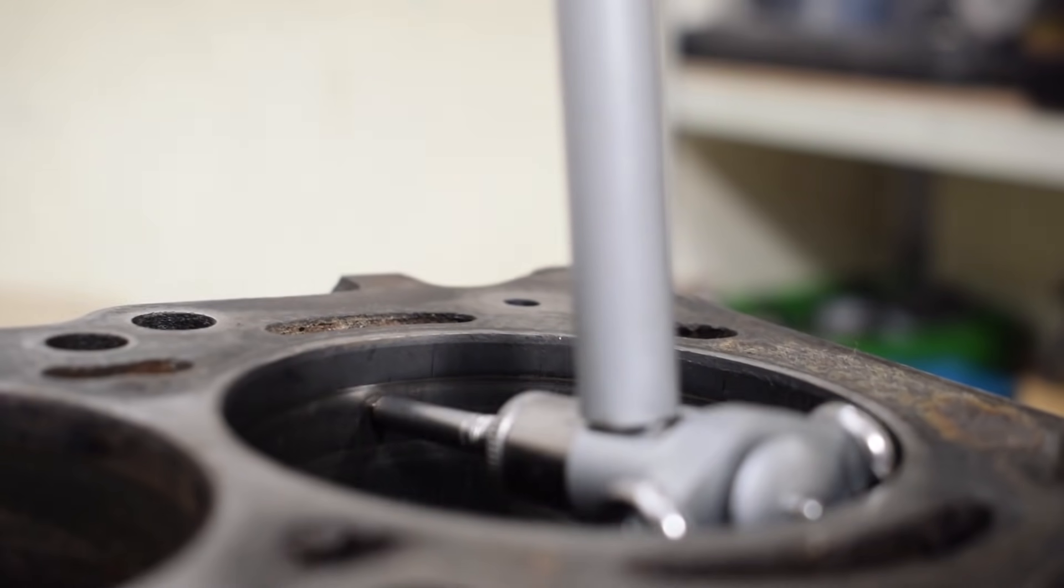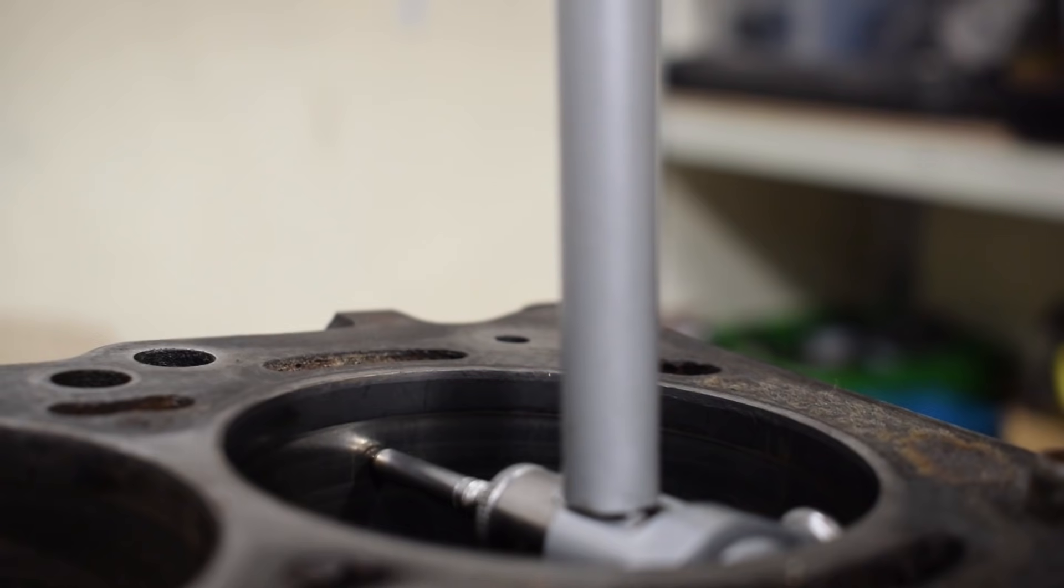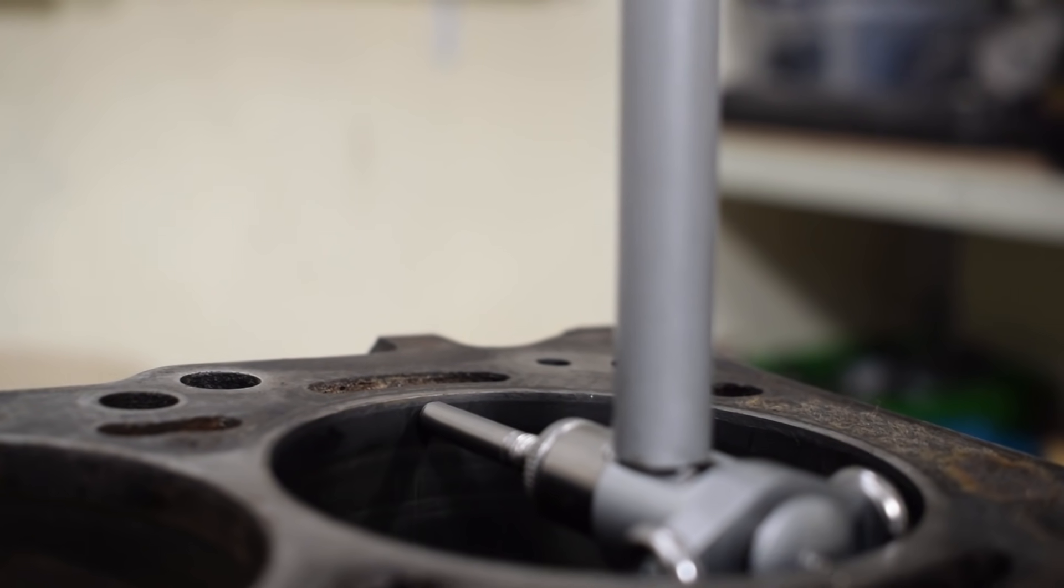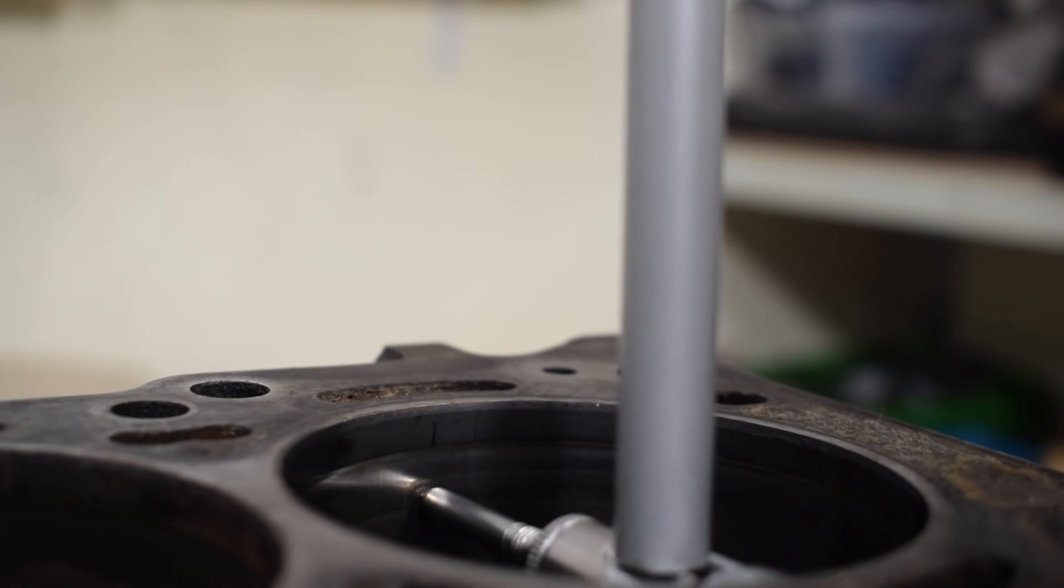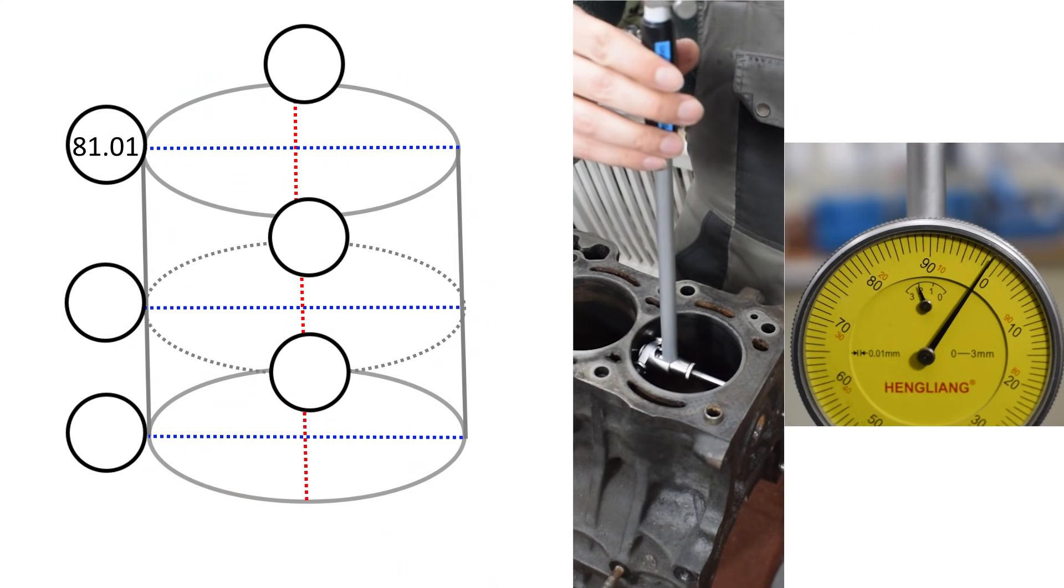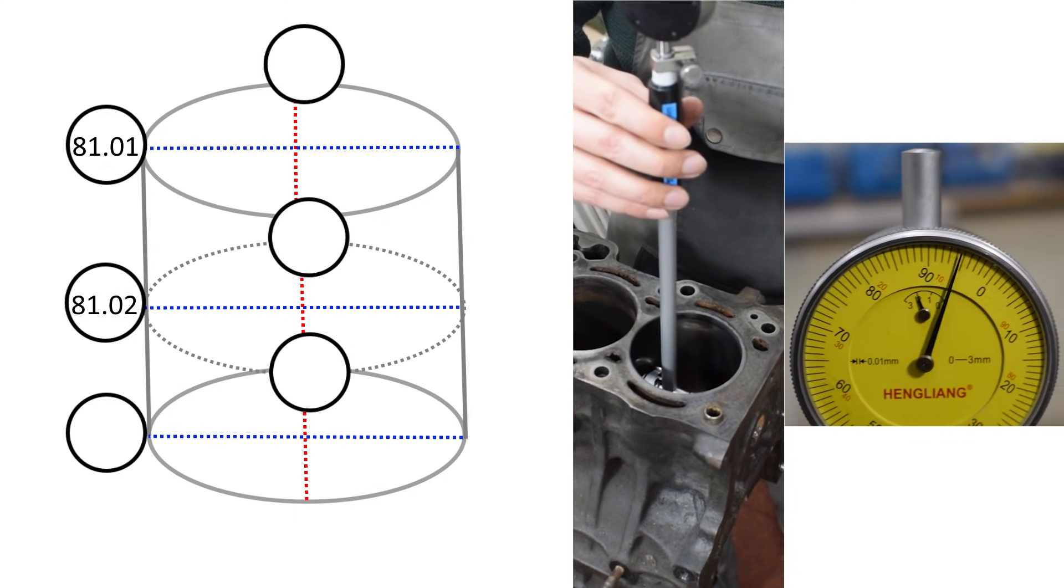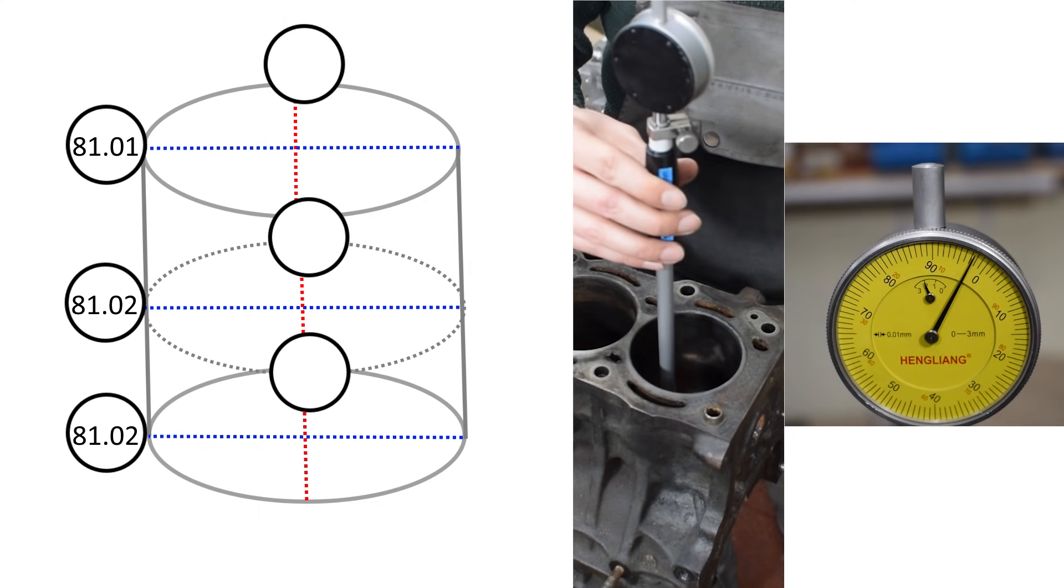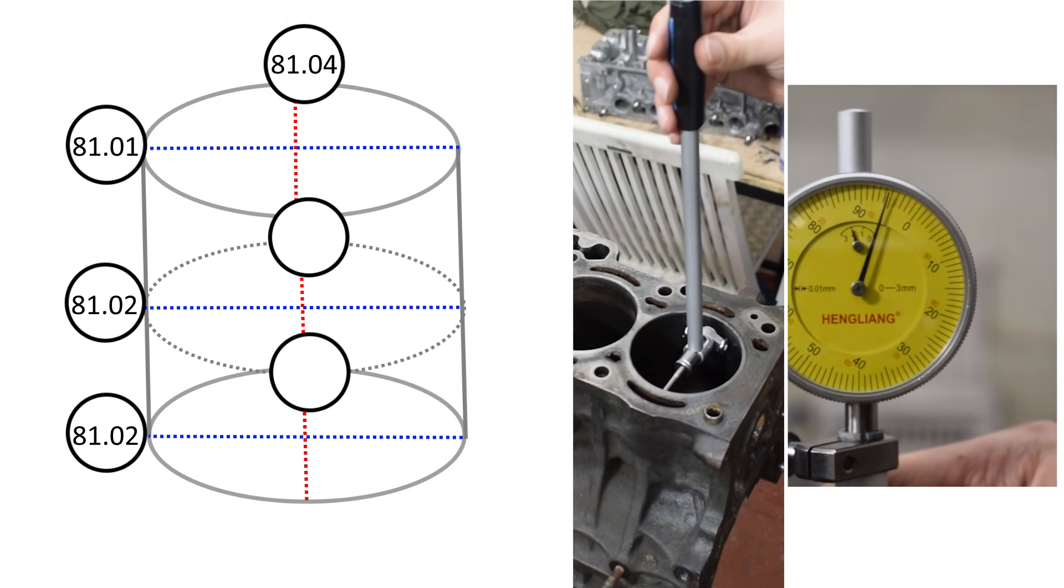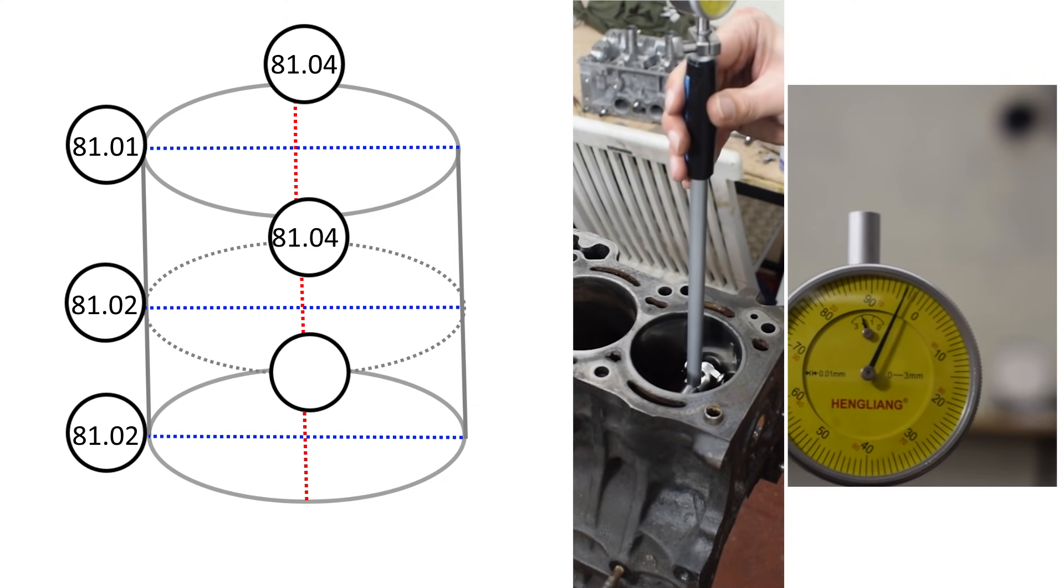When measuring at the top you want to measure below the ridge that's usually present at the top of the cylinder, which means that you'll be measuring around 10 to 15 mm below the top. Same thing goes for the bottom, you're measuring some 10 to 15 mm above the actual bottom of the cylinder bore. So here's the top of the non-thrust side, the middle of the non-thrust side and the bottom of the non-thrust side. Now we're switching to the thrust side and again here we have the top, middle and bottom.